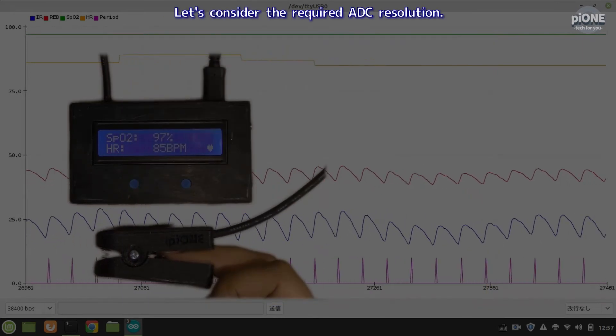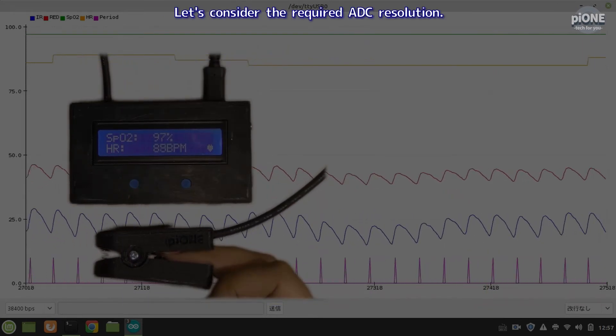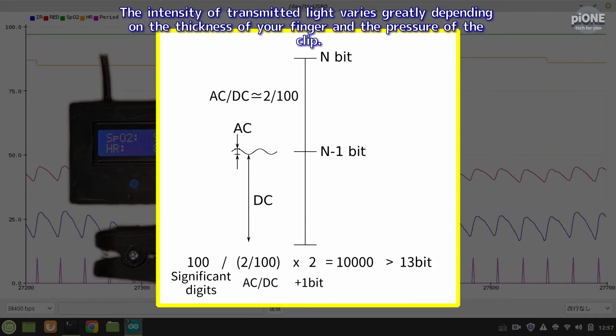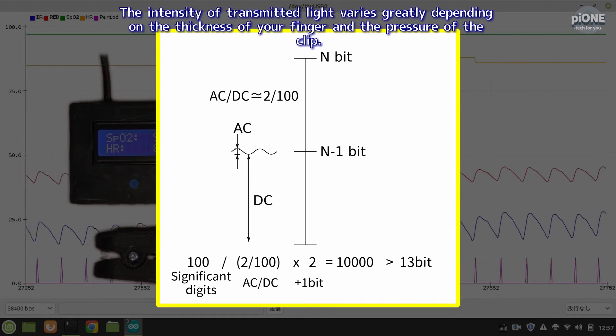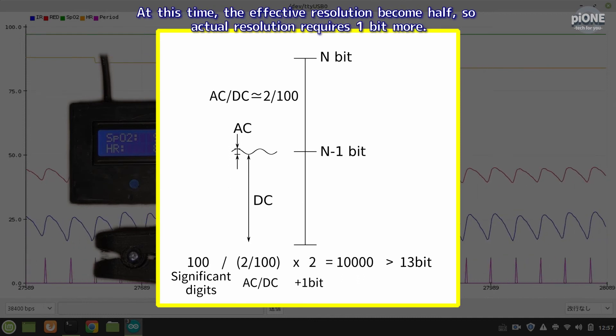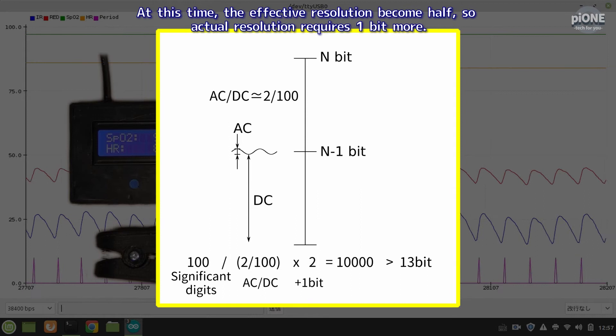Let's consider the required ADC resolution. The intensity of transmitted light varies greatly depending on the thickness of your finger and the pressure of the clip. To avoid ADC overrange, adjust gain to operate near the center of the ADC range. At this time, the effect of resolution becomes half, so actual resolution requires one bit more.